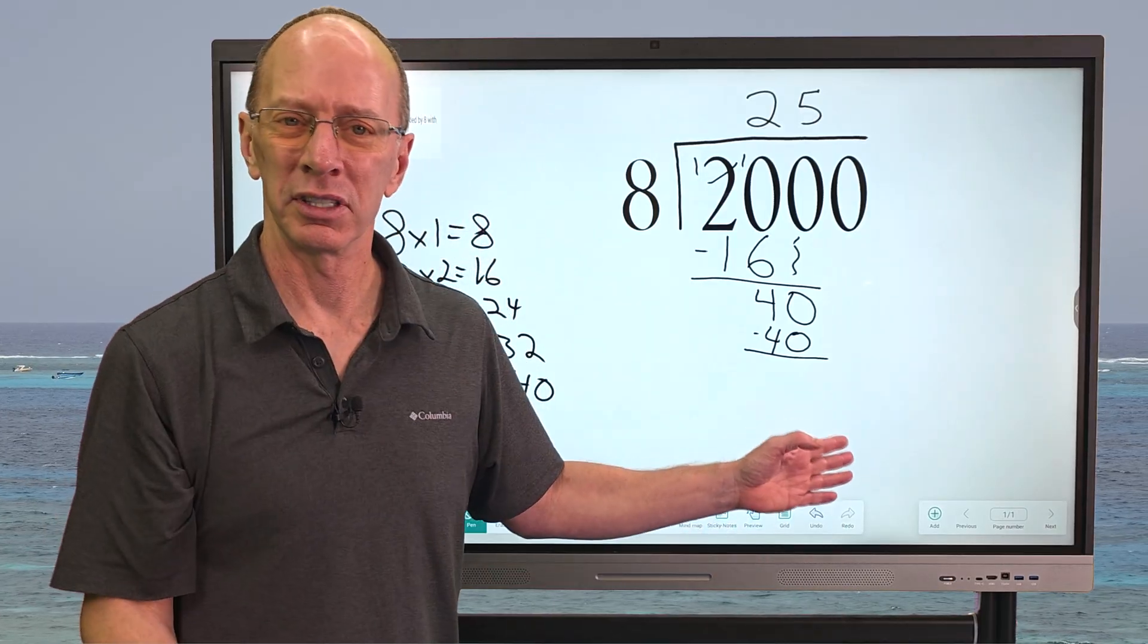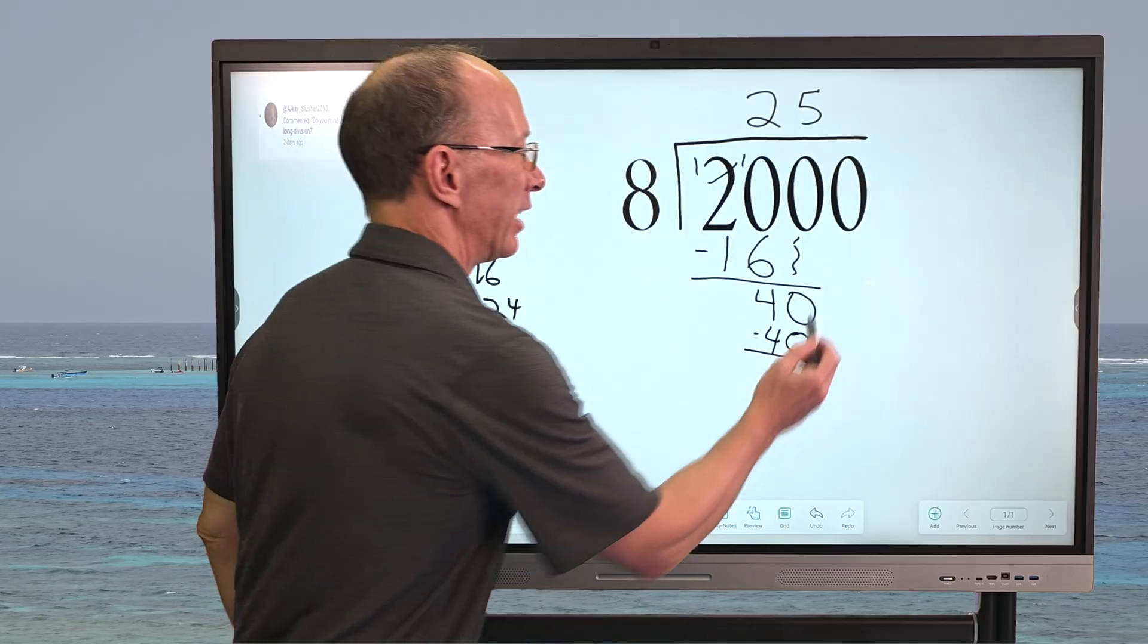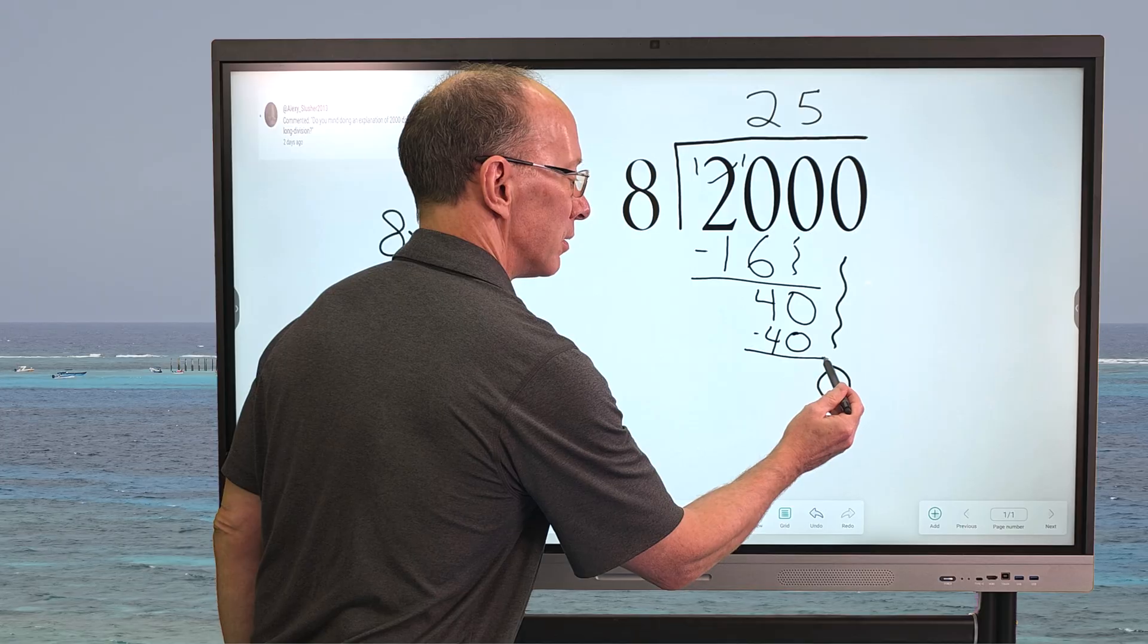You don't even have to put the zero there. Then we bring the next number down right here. Bring that next number down right here. This is zero.